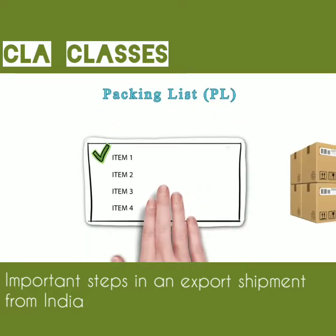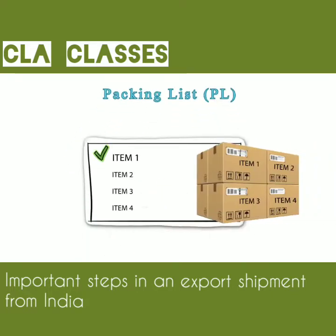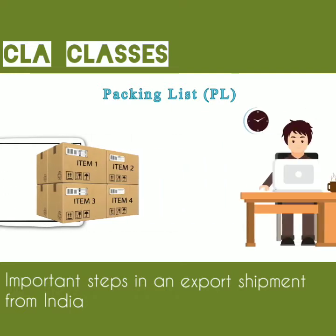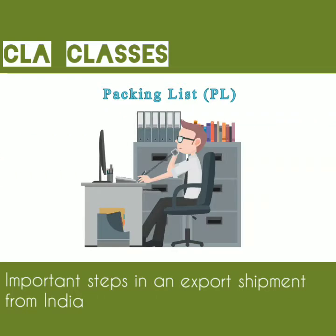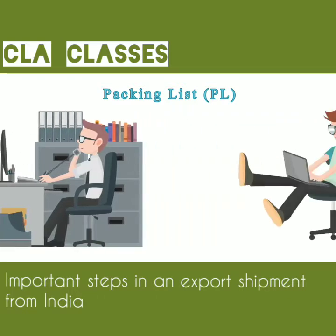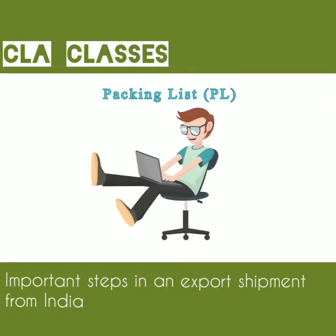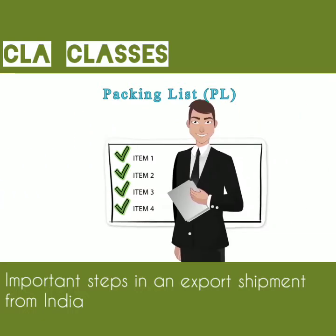Packing List: The Packing List contains an item-wise list of the package contents. It serves to inform all parties — like transport agencies, government authorities, and the buyer — about the contents of the package. It is also referred to when customs authorities inspect the content of a shipment.